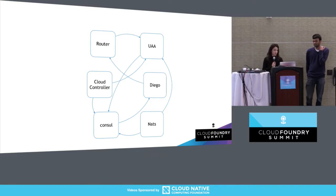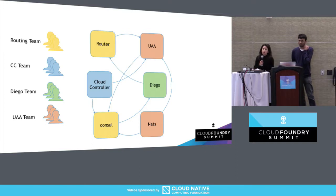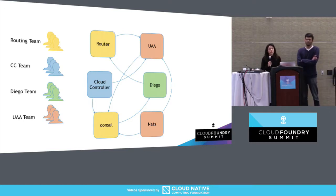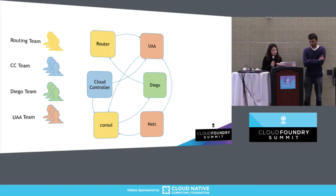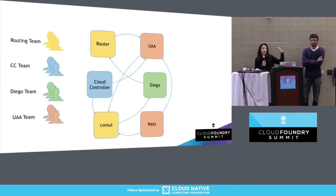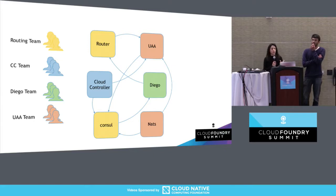Each component is developed and supported by a separate team. Those teams live all over the world — there are over 20 Cloud Foundry teams doing work related to the product, and they may be distributed themselves. Each team works and releases at its own cadence, but they also need to verify that the components they interact with are stable. There's also complicated configuration management, such as sharing credentials across components.